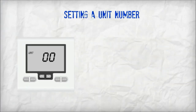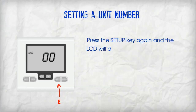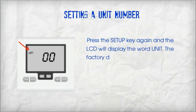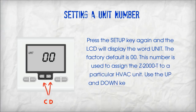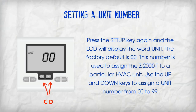Setting a unit number. Press the setup key again and the LCD will display the word 'unit'. The factory default is 00. This number is used to assign the Z2000T to a particular HVAC unit. Use the up and down keys to assign a unit number from 00 to 99.